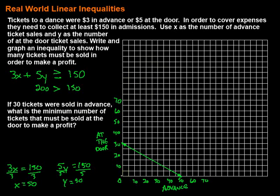Then we need to figure out where to shade. With an inequality there's always a place to shade showing what works. We can test the point (0, 0): if we plug in 0 for x and y, we get 3(0) + 5(0) = 0, and 0 is not greater than or equal to 150 — that's not true. So (0, 0) doesn't work, meaning we shade on the other side. Everything in the shaded area represents a combination of ticket sales that would work. If we sold 0 tickets, obviously we won't make $150.